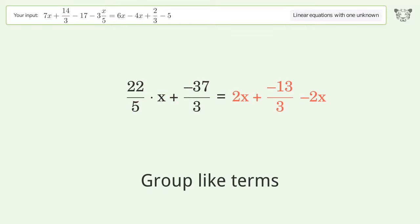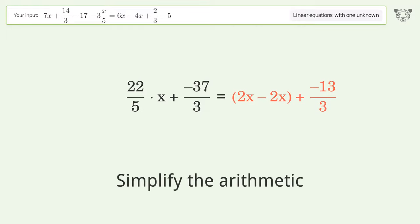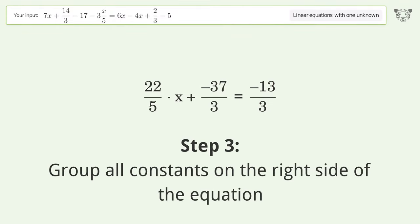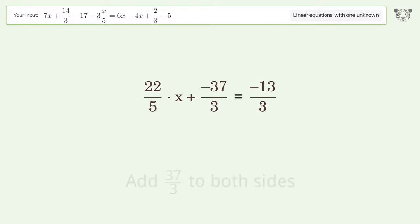Group like terms. Simplify the arithmetic. Group all constants on the right side of the equation. Add 37 over 3 to both sides.